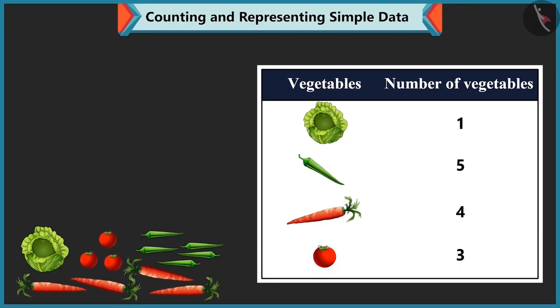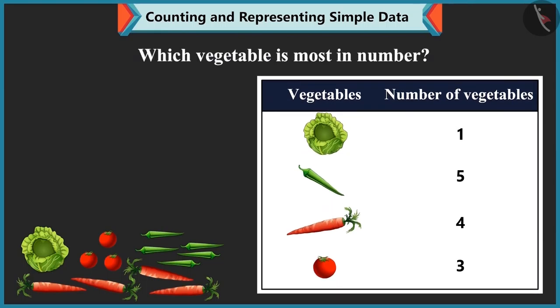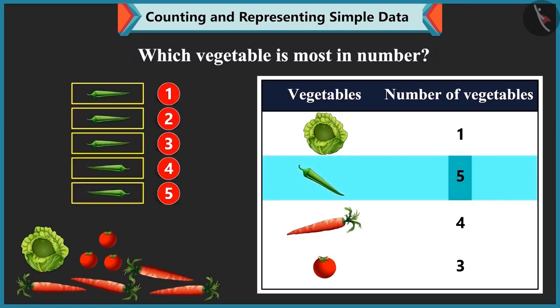Okay, Bubbly. Now tell me. Which vegetable is most in number? There are 5 chillies. So, it is most.